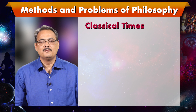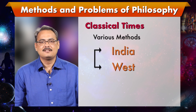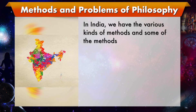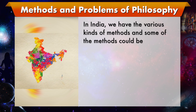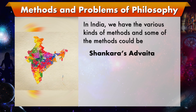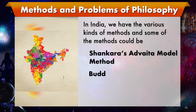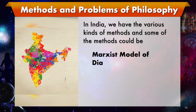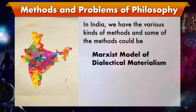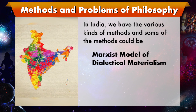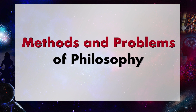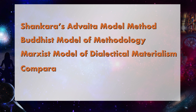From classical times, both in India and in the West, there are various methods that philosophers have adapted to address the problems they are trying to deal with. In India we have various kinds of methods — some of the methods could be like Shankara's Advaitin model of method, and we also have the Buddhist model of methodology, and similarly the Marxist dialectical materialist model. Along with these we also have a model that has developed in the recent past as a comparative method. These methods would be discussed in the course of the discussion during these days.